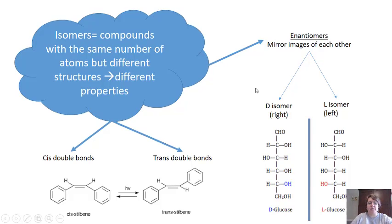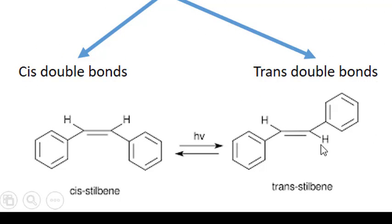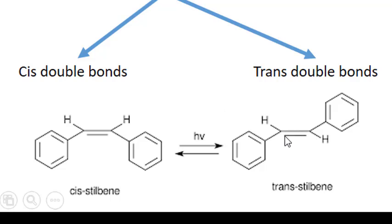Here we have the difference between a cis double bond and a trans double bond. This is the same molecule showing each of the double bonds. Remember that bends in the structure without a labeled atom represent carbons, so this double bond is connecting two carbons. The hydrogens off those carbons are on the same side of the double bond — students like to say cis double bonds are like sisters, on the same side. In a trans double bond, the hydrogens are on opposite sides.